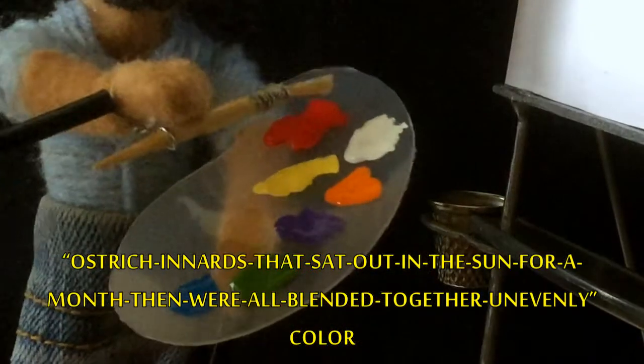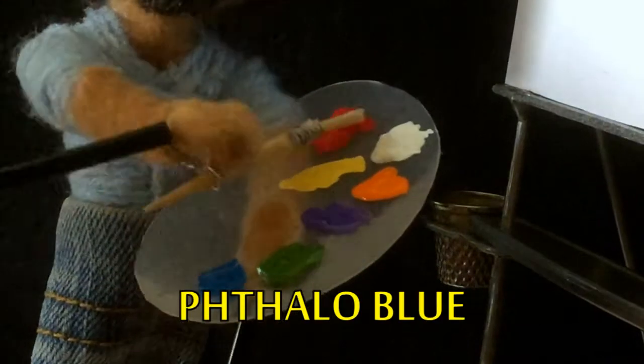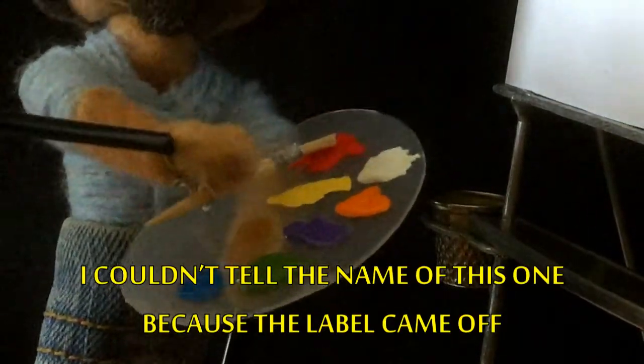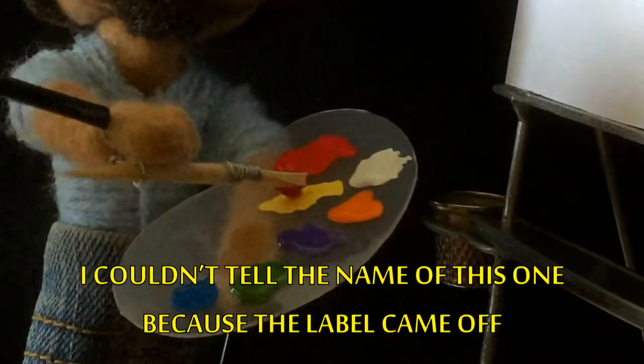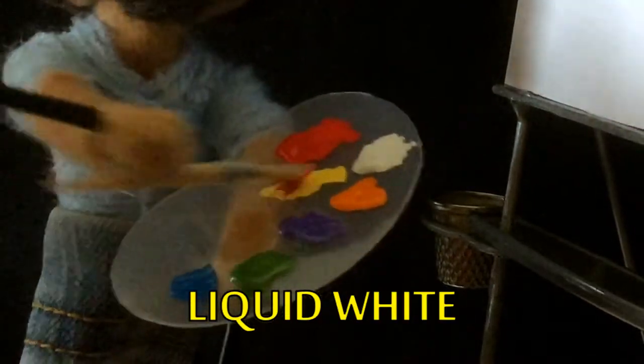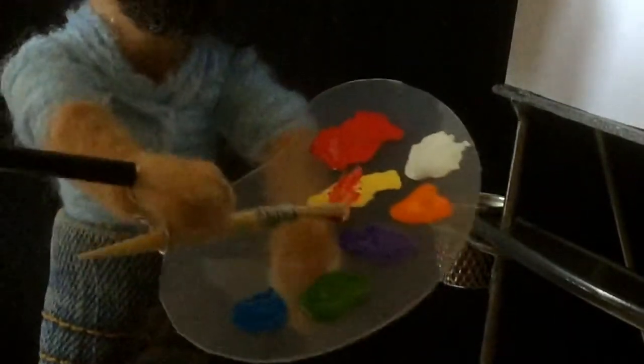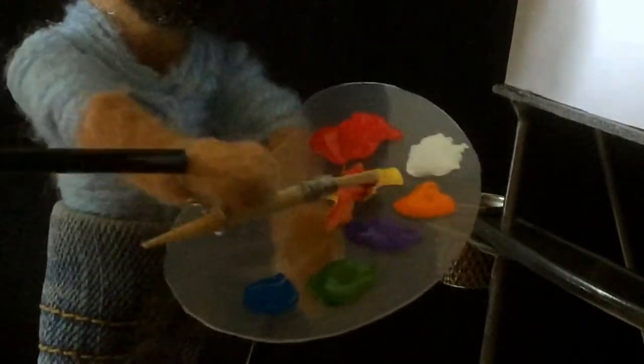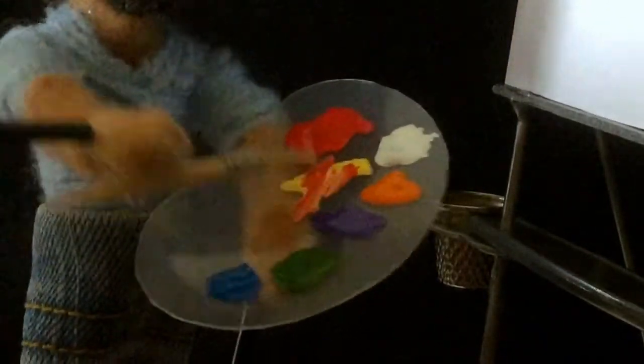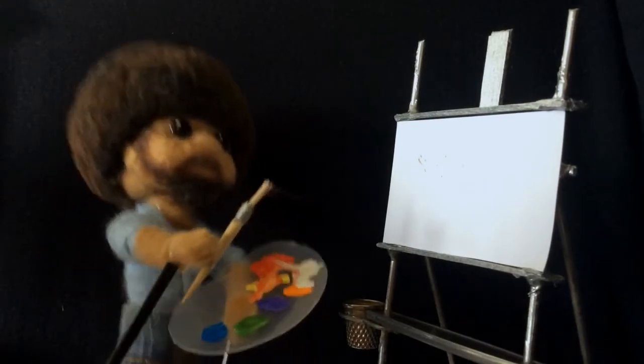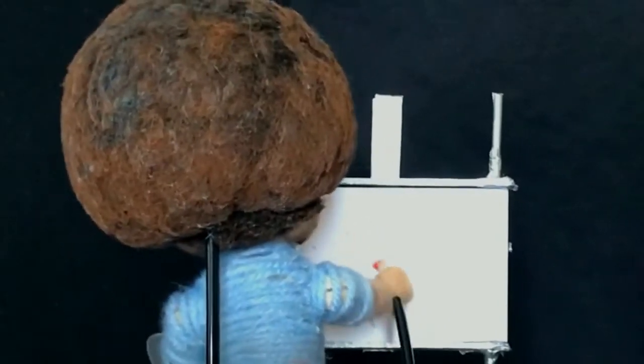So first what we're going to do is we'll take a little bit of the crimson red and mix that in with just a little bit of the bright yellow. Now don't worry too much about getting the mixture here just right. That's the wonderful thing about this whole process is that no one's telling you what to do. In your own little world you get to make all the decisions and you know what? I know you can.